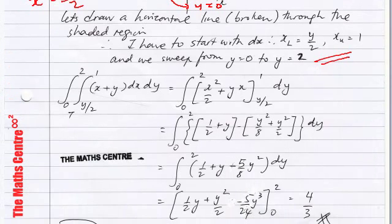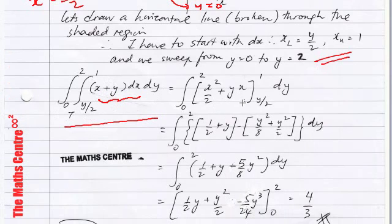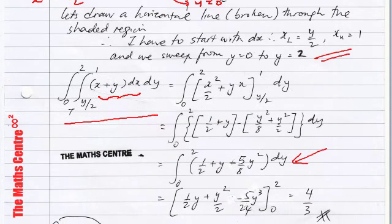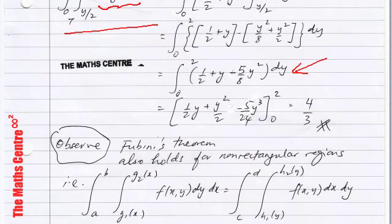Here we have the integral of x plus y dx dy, with x limits from y over 2 to 1 and y values from 0 to 2. We are integrating with respect to x, so y is held constant. Carrying out the integration gives x squared over 2 plus yx, with limits from y over 2 to 1. Clean this up carefully — there is an upper limit of 1 and a lower limit of y over 2. Then carry out single-variable integration with respect to y, plug in the values 2 and 0, and you get 4 over 3.